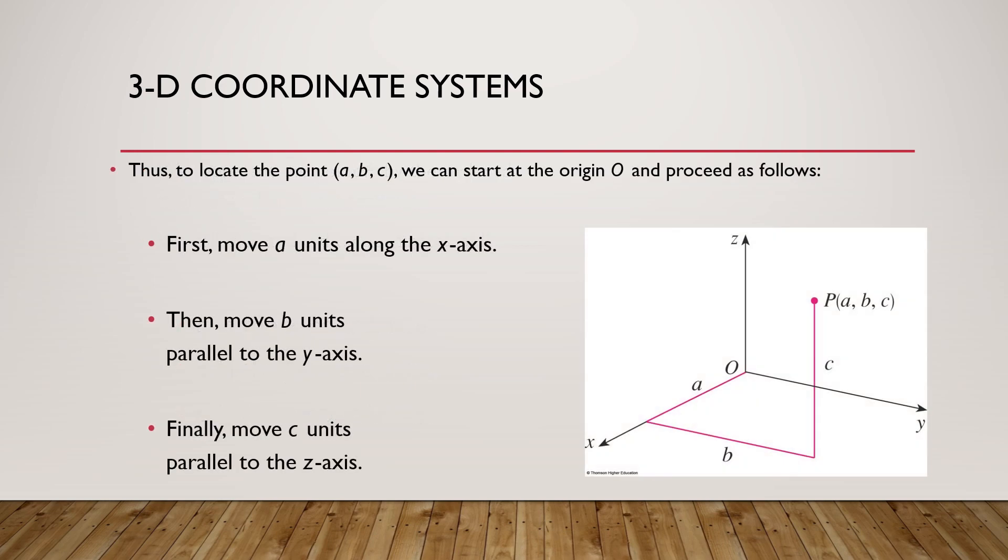Just to locate a point ABC, we can start from the origin, that is, we can move a units along the x-axis, b units along the y-axis and then c units along the z-axis to reach a point P.